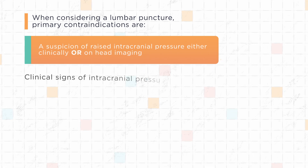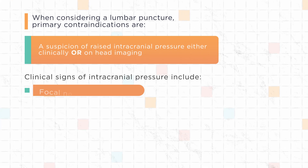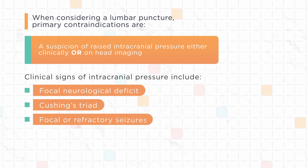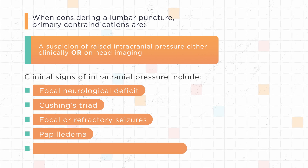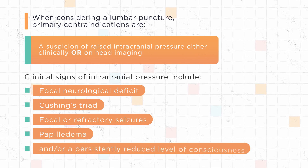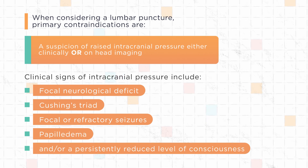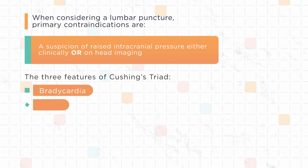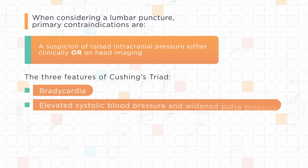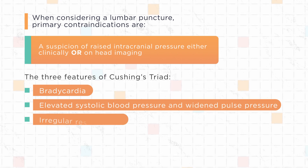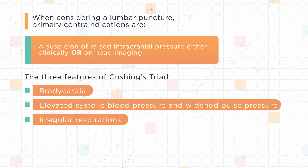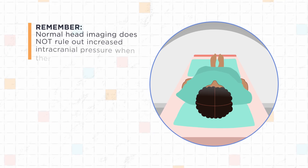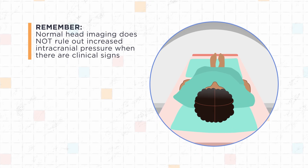Clinical signs of intracranial pressure include focal neurological deficit, Cushing's triad, focal or refractory seizures, papilledema, and/or a persistently reduced level of consciousness. The three features of Cushing's triad are bradycardia, elevated systolic blood pressure and widened pulse pressure, and irregular respirations. Remember, normal head imaging does not rule out increased intracranial pressure when there are clinical signs.